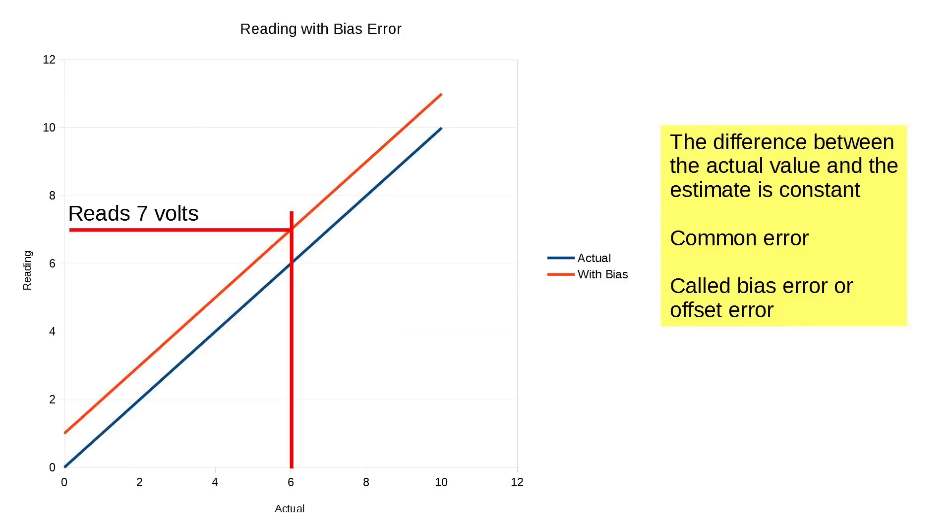Now, here's a reading with a bias error. This thing has a bias error of one volt. The difference between the actual value and the estimate is a constant. This is a common error. And this is the error we were looking at on that meter. This is called a bias error or an offset error. And in this one, where I really exaggerated, the offset is one volt. So if the actual value is six volts, it'll read seven volts.